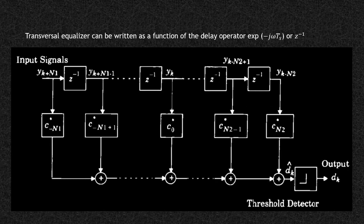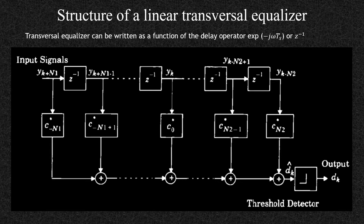Now we will talk about how this particular transversal equalizer looks. This is the structure of a linear transversal equalizer. The transversal equalizer can be written as a function of the delay operator, that is e to the minus j omega Ts, which is the symbol duration, or z raised to minus 1. So if the input signal goes in, this provides a delay of one symbol duration, then two symbol duration, and so on. All these symbols are collected together. This structure provides a reliable or maximum output, with a threshold detector making decisions on each symbol.